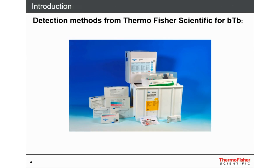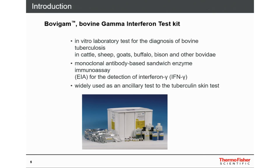On this slide, I show what we currently offer at Thermo Fisher Prionics to detect bovine tuberculosis. You see the Bovigam test and the different PPDs produced in Lelystad, Netherlands. The Bovigam test is an in vitro laboratory test for the diagnosis of bovine tuberculosis. You can use it in cattle, sheep, goats, buffalo, bison, or other bovids. It's a monoclonal antibody sandwich ELISA that detects interferon gamma, so you have to stimulate the blood or sample beforehand.